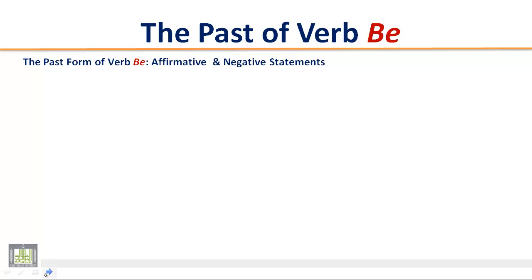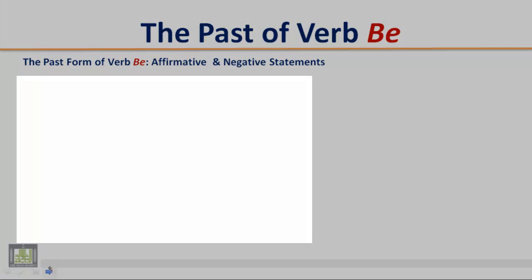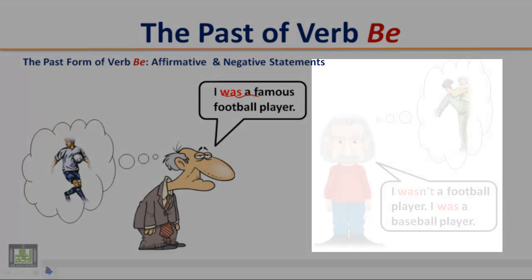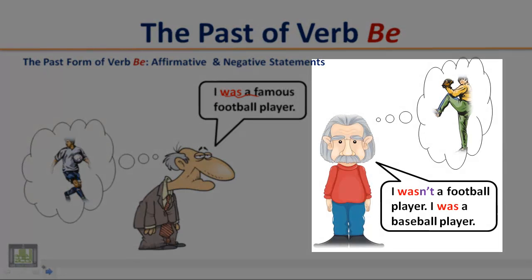Listen to the following short conversation and pay attention to the past form of verb B in affirmative and negative statements. 'I was a famous football player.' 'I wasn't a football player — I was a baseball player.'